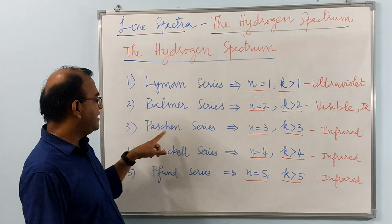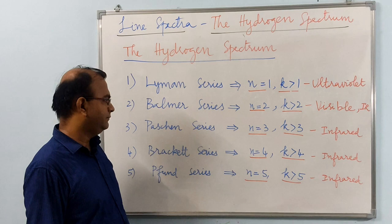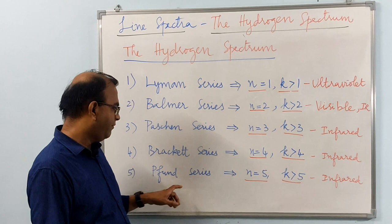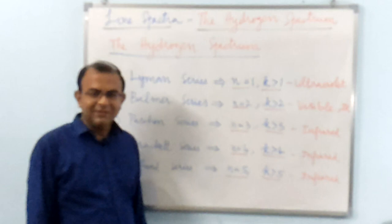For N equals 3, it is the Paschen series, k must be greater than 3, it falls in the infrared region. For N equals 4, it is the Brackett series, k must be greater than 4, it falls in the infrared region. For N equals 5, it is the Pfund series, k must be greater than 5, it falls in the infrared region. So these 5 series form the hydrogen spectrum.